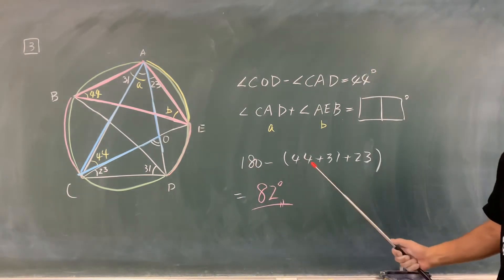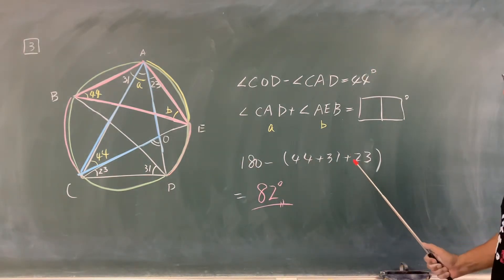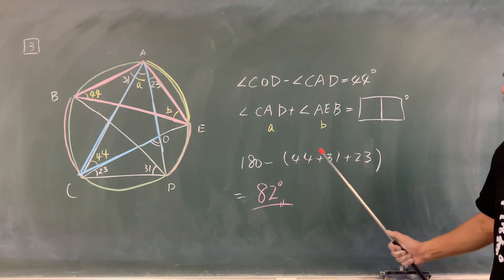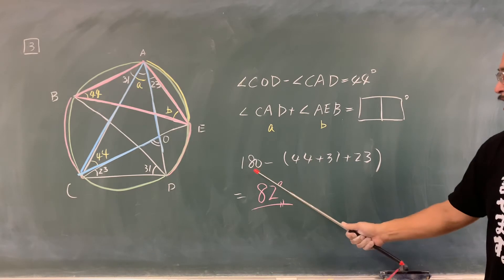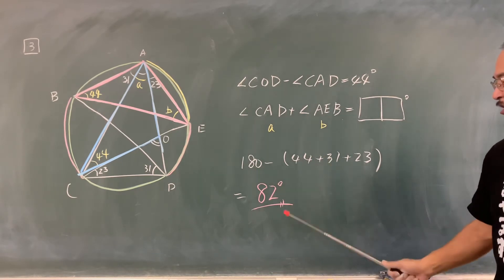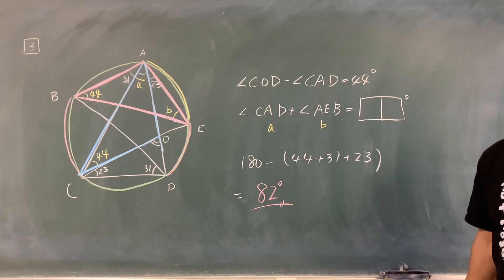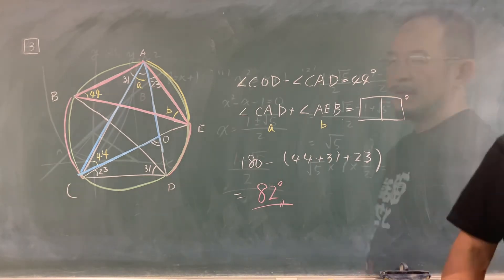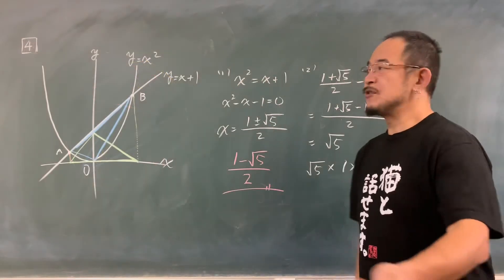180度から44、31、23を引いたものがAたすBになりますので、44+31+23、合わせて98ですね。180-98で、82度という答えになります。4番です。YイコールX²と、YイコールX+1が2点で交わっていると。